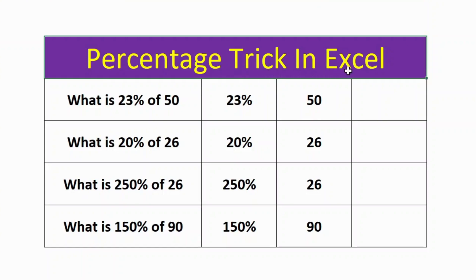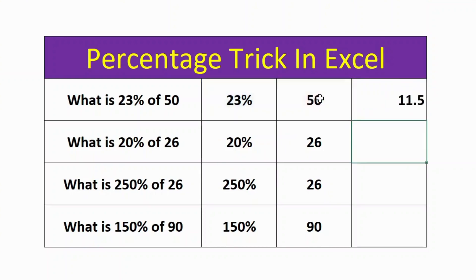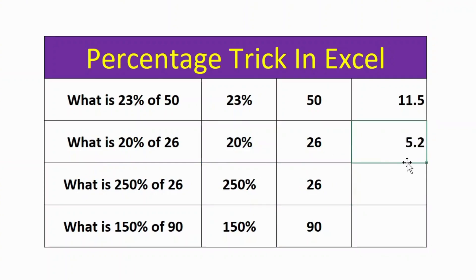Percentage trick in Excel: what is 23 percent of 50? The calculation is very simple — it's equal to percentage multiplied by number. Press Enter. Similarly, for the second one: percentage multiplied by number, press Enter. You can then extend the formula for the rest of the cells. Here is the result. Thank you.